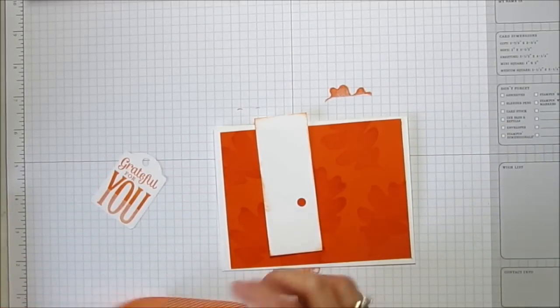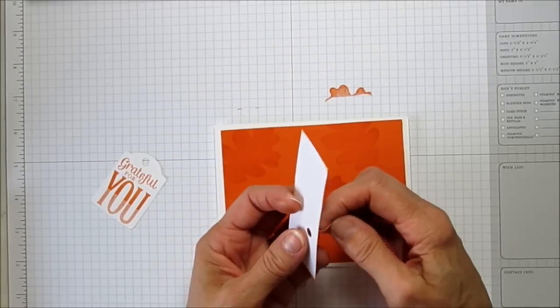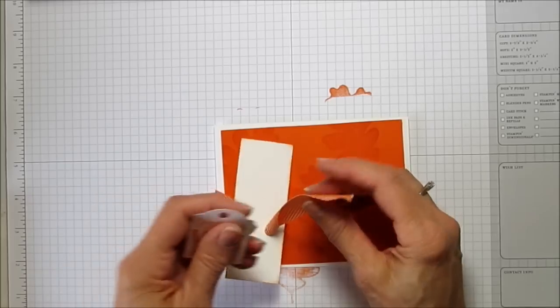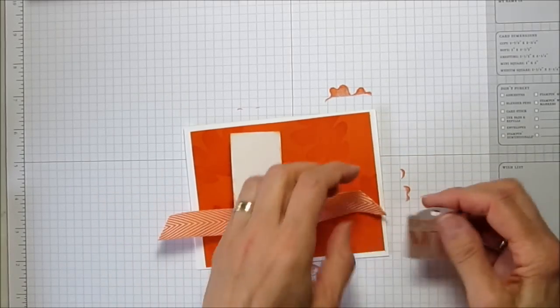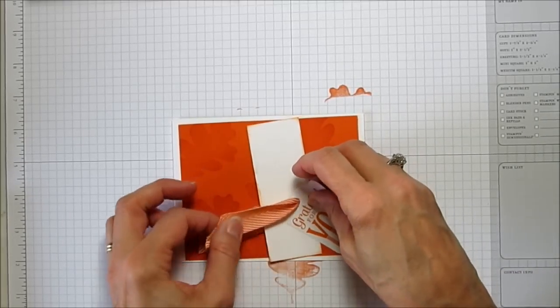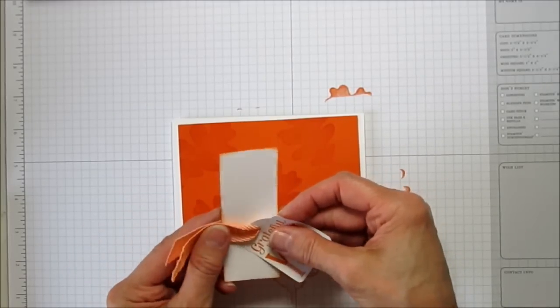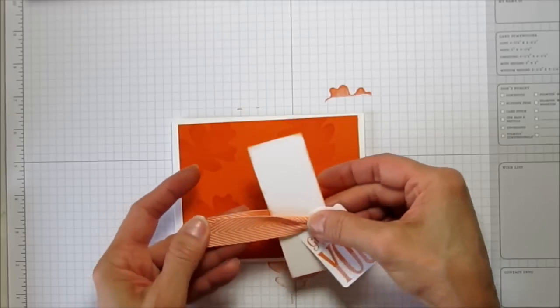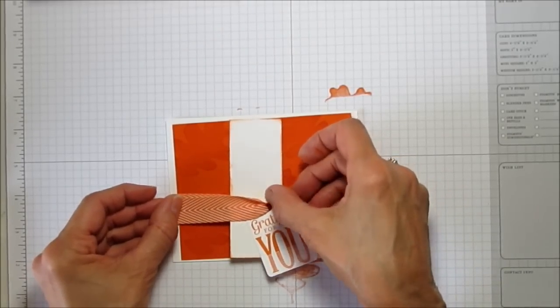I'm going to put a little hole like that. I'm going to grab my chevron Pumpkin Pie ribbon. This is about six inches, maybe a little bit longer. I'm going to put my ribbon in here and then I'm going to string also my sentiment on that because I want this to look like it's coming off the side like that. Even these ends up right here.